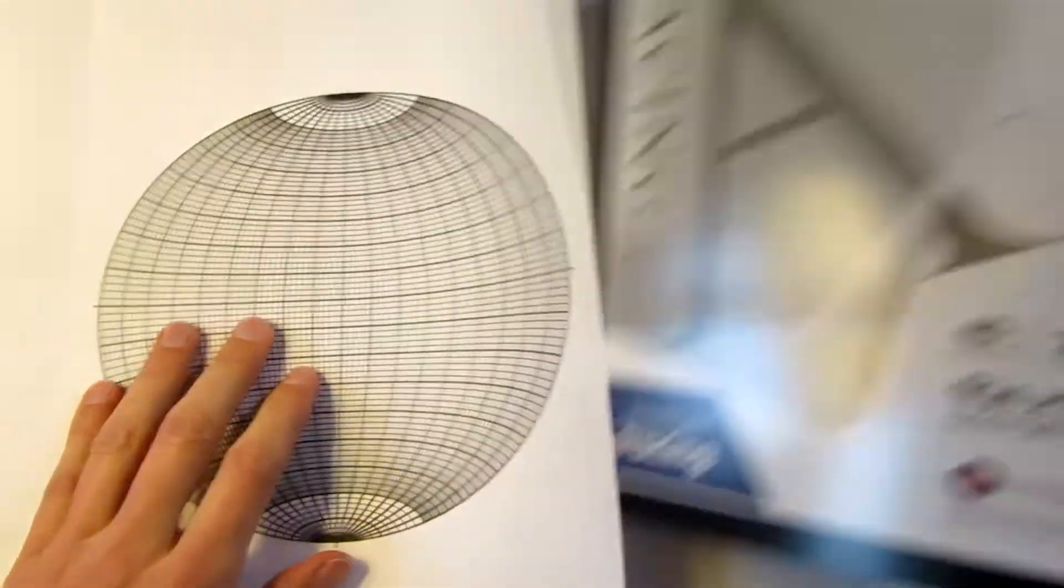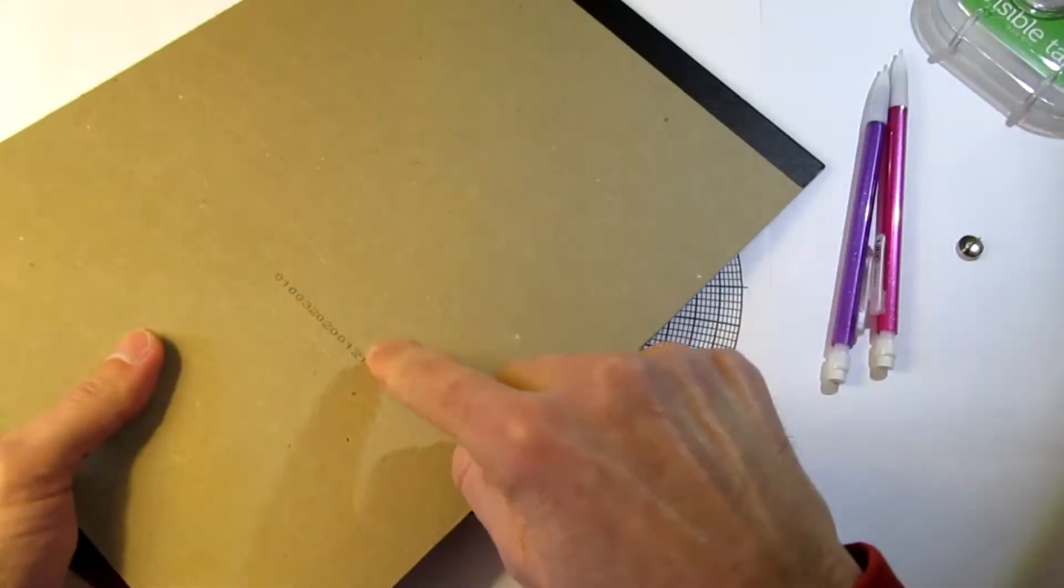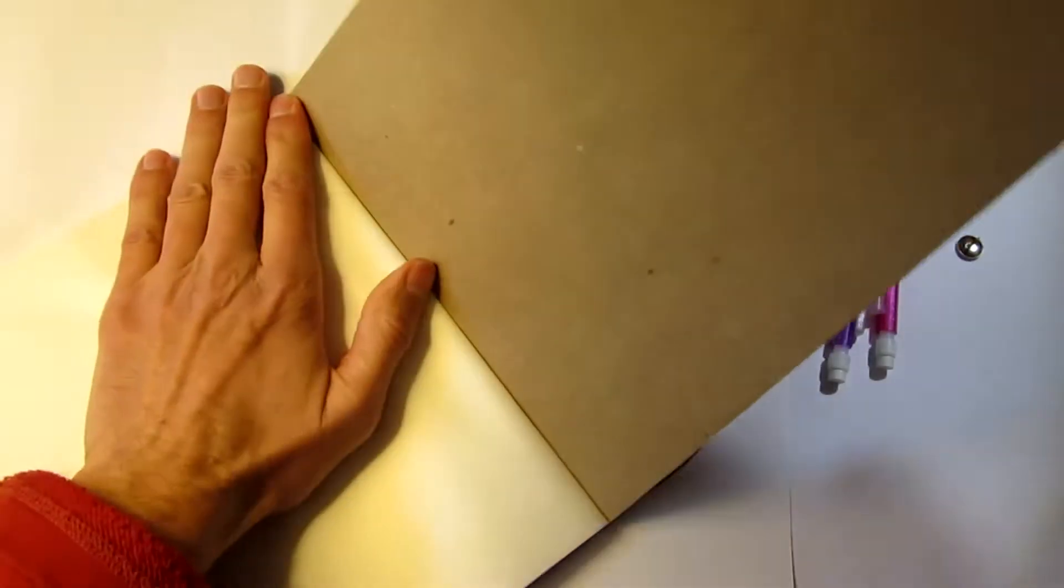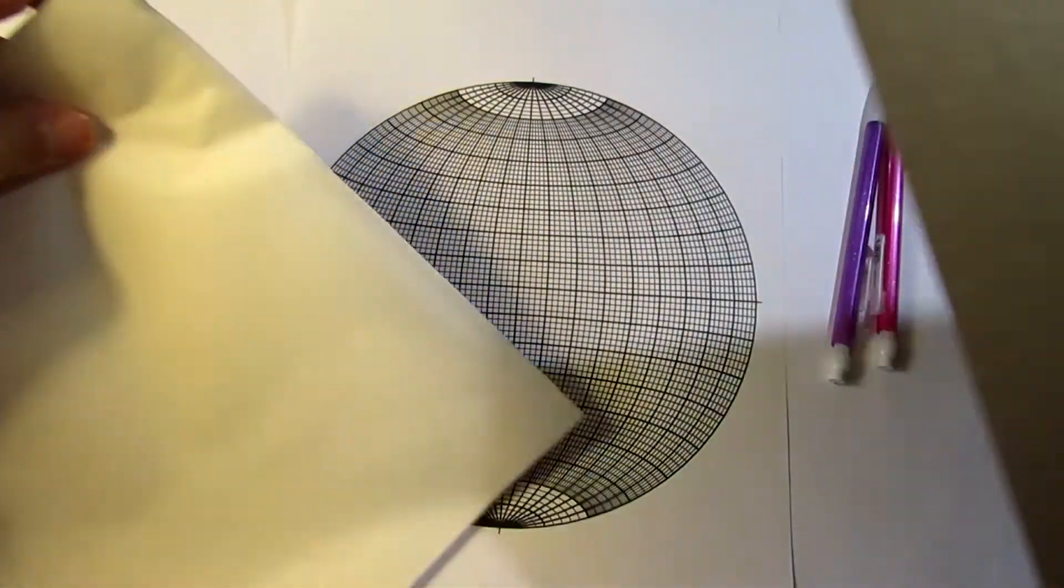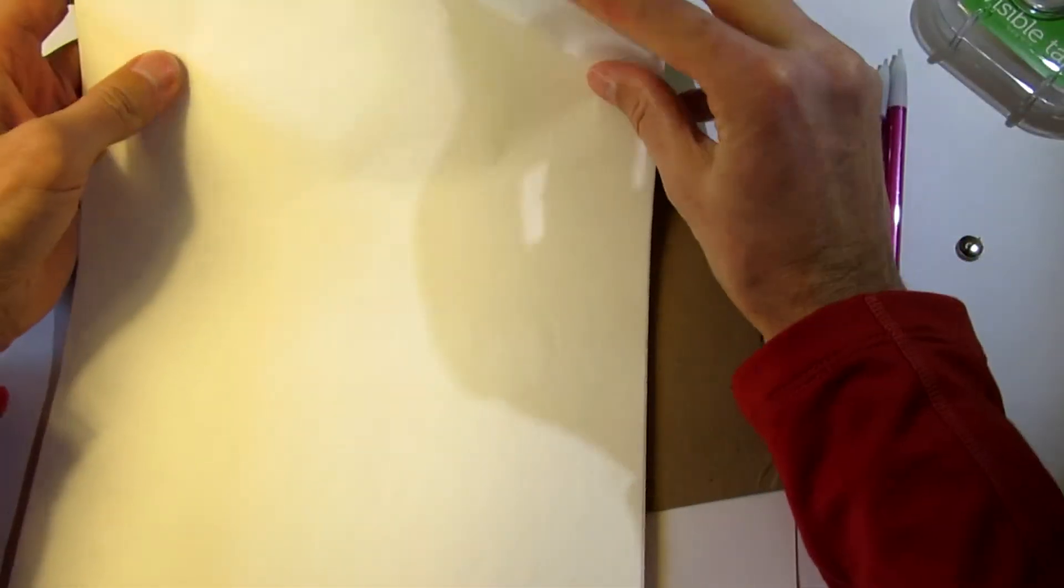So the first step is we're actually going to use the cardboard on the back of the tracing paper. Tear that off and you may lose some tracing paper but hold on to it, you're going to need it.